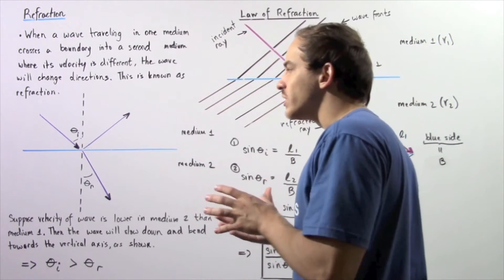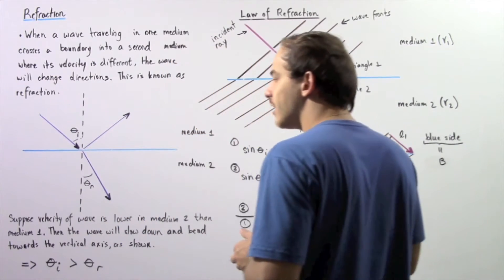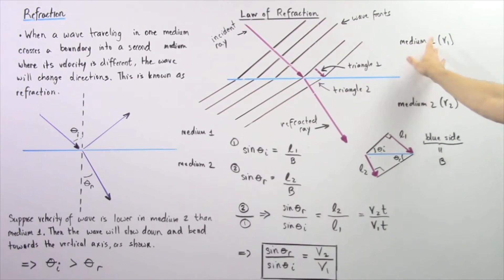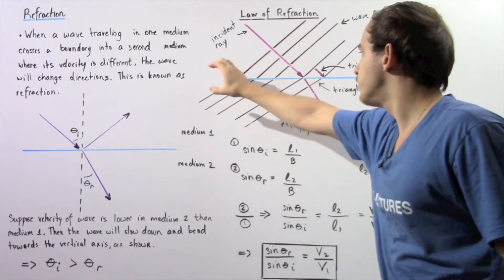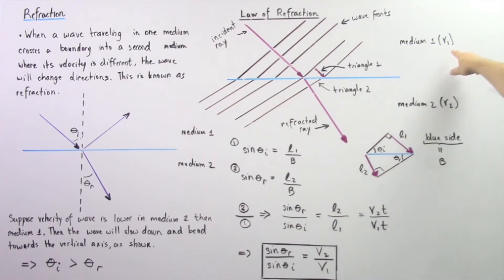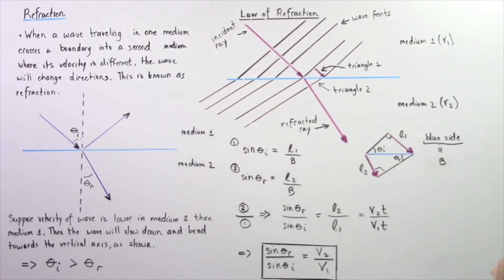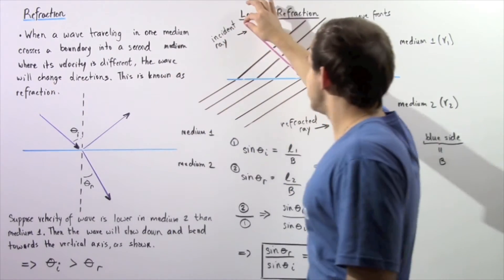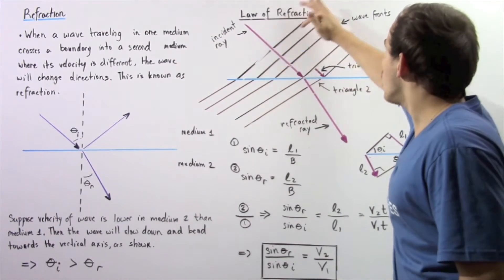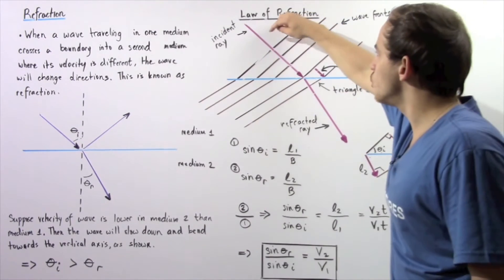Now let's figure out a relationship between the angle of incidence and the angle of refraction — commonly known as the law of refraction. Suppose we have medium one where the velocity of the ray is V1, a separation line (the blue line) between medium one and medium two, and the velocity in medium two is V2. We assume V1 is greater than V2. The ray travels in medium one and these are the wave fronts, which are always perpendicular to the ray.